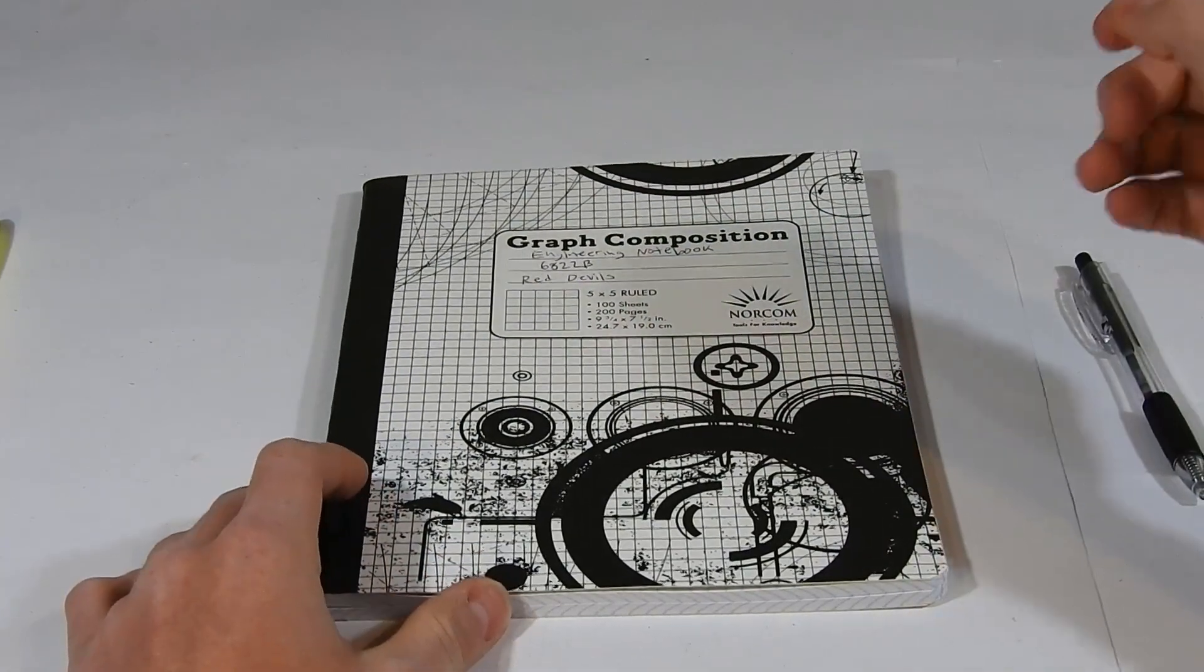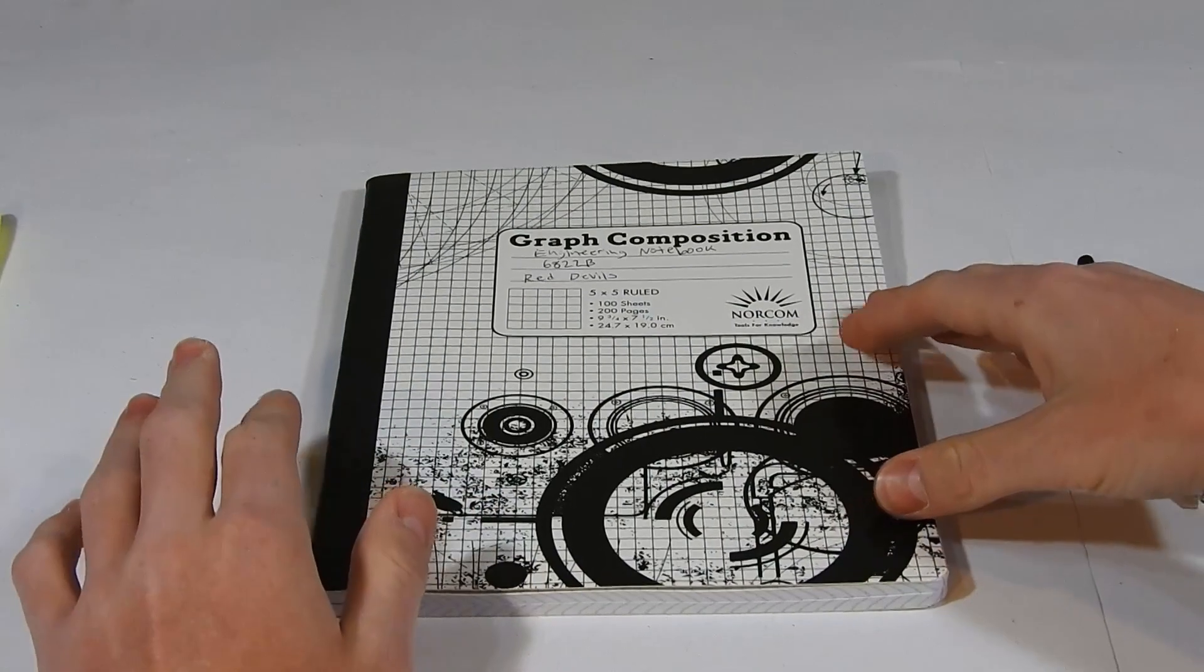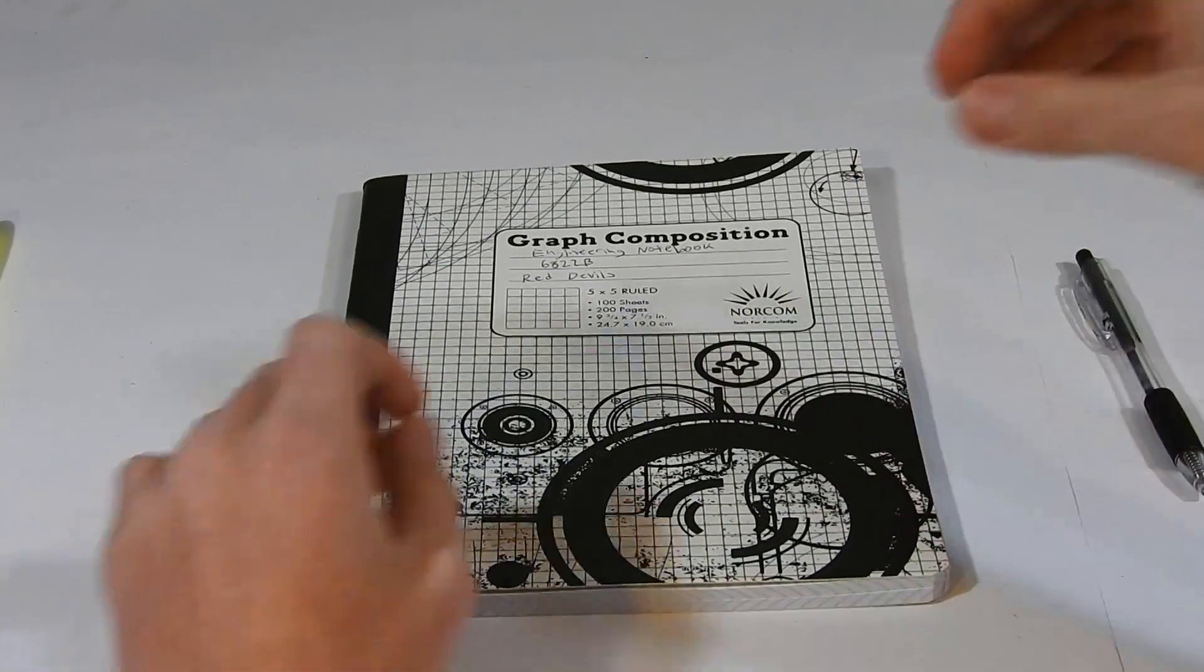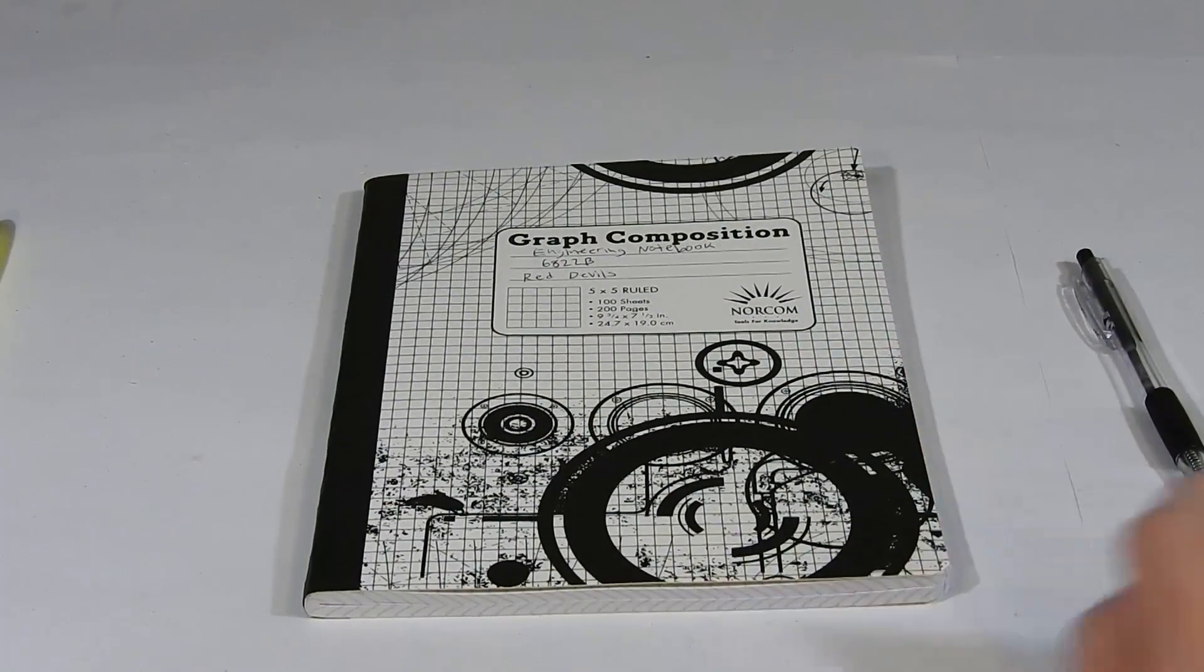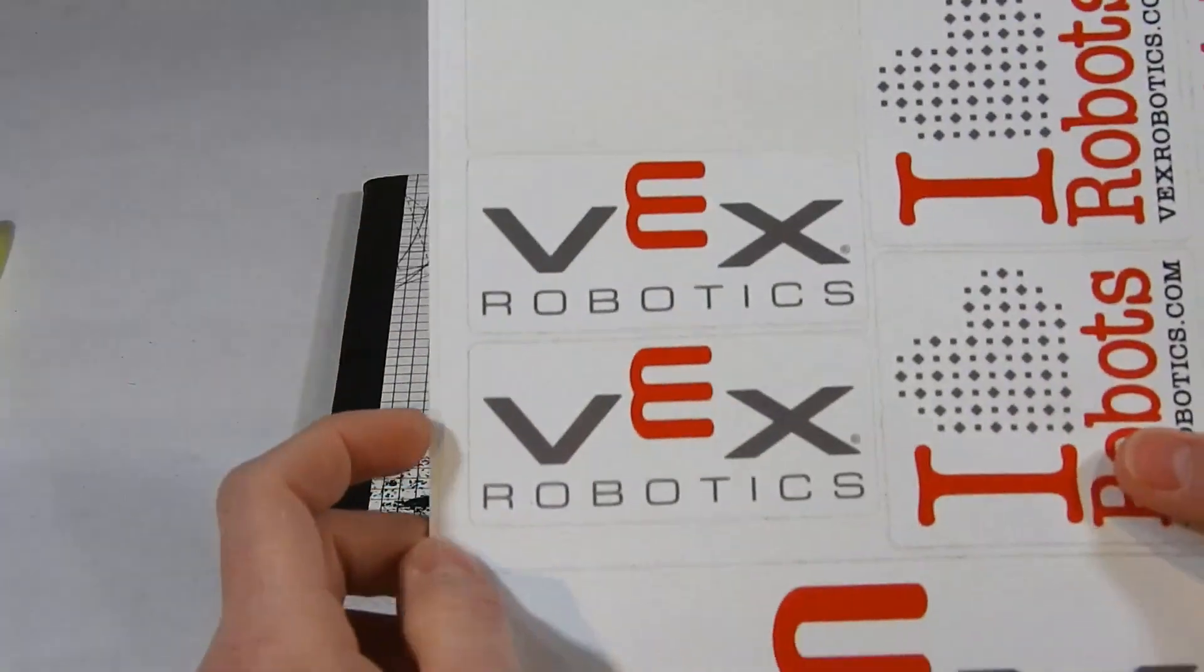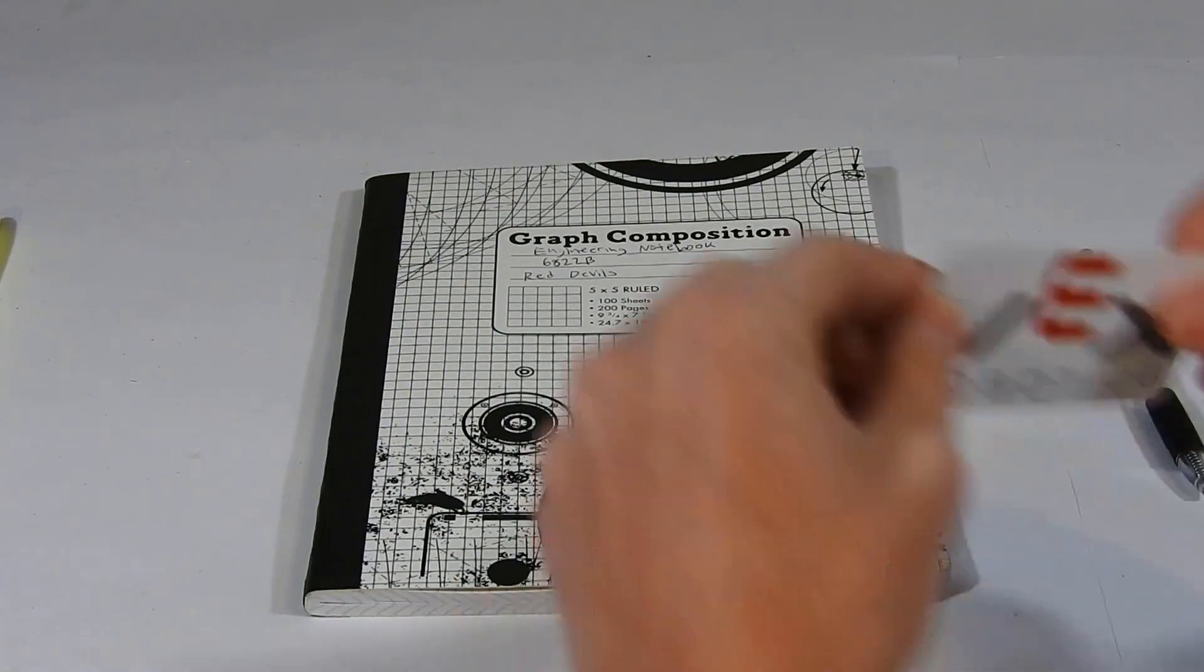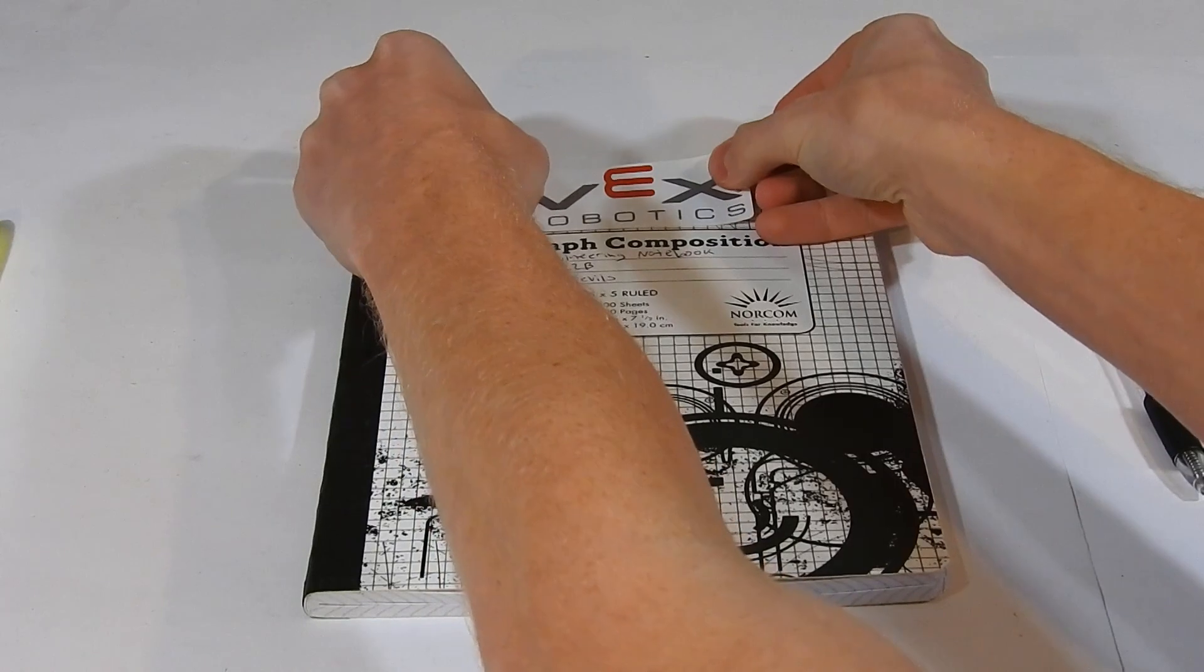Beyond that, you can decorate the front cover however you want because again, you can be as creative as you want but try to keep it as professional as possible. I like to always take a Vex Robotics sticker. You get these when registering for your teams, and I place one right at the top.